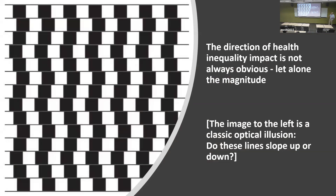Let me talk about some key concepts now. Direction and magnitude of health inequality impacts — that's what we're trying to measure. Even the direction is not always obvious. Here's a little optical illusion: these lines look wonky, but they're actually all parallel. It's a bit like that with health inequality impact — sometimes we think it's obviously going to be good, but it might not be. That's why we need a bit of analysis and evidence.